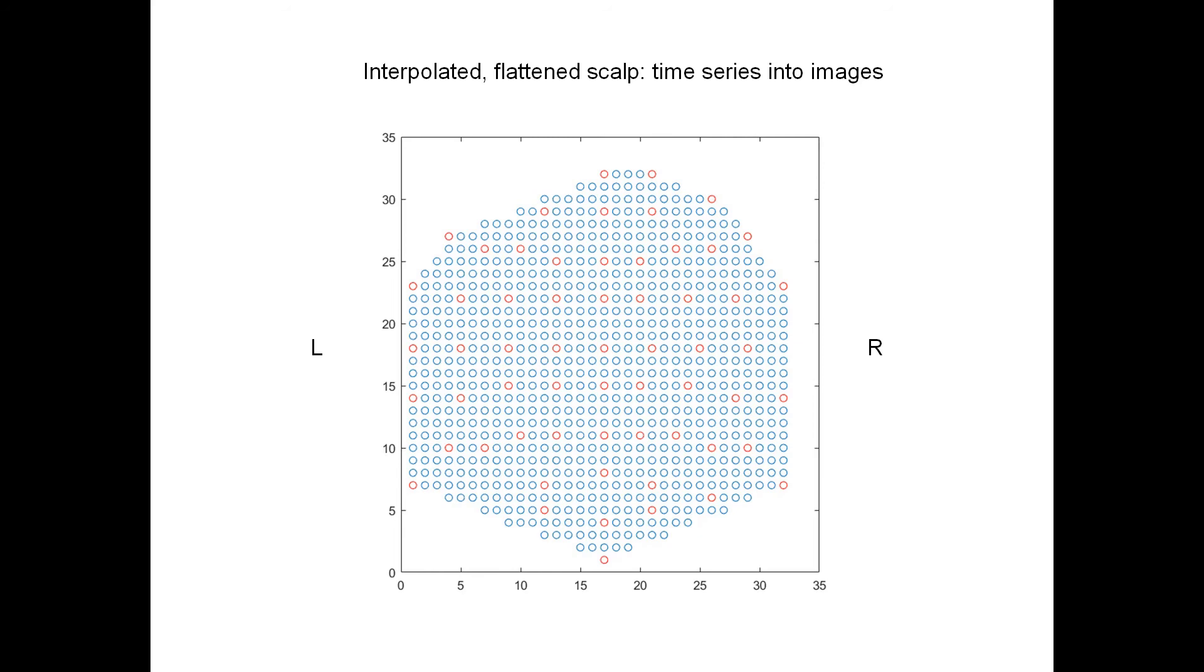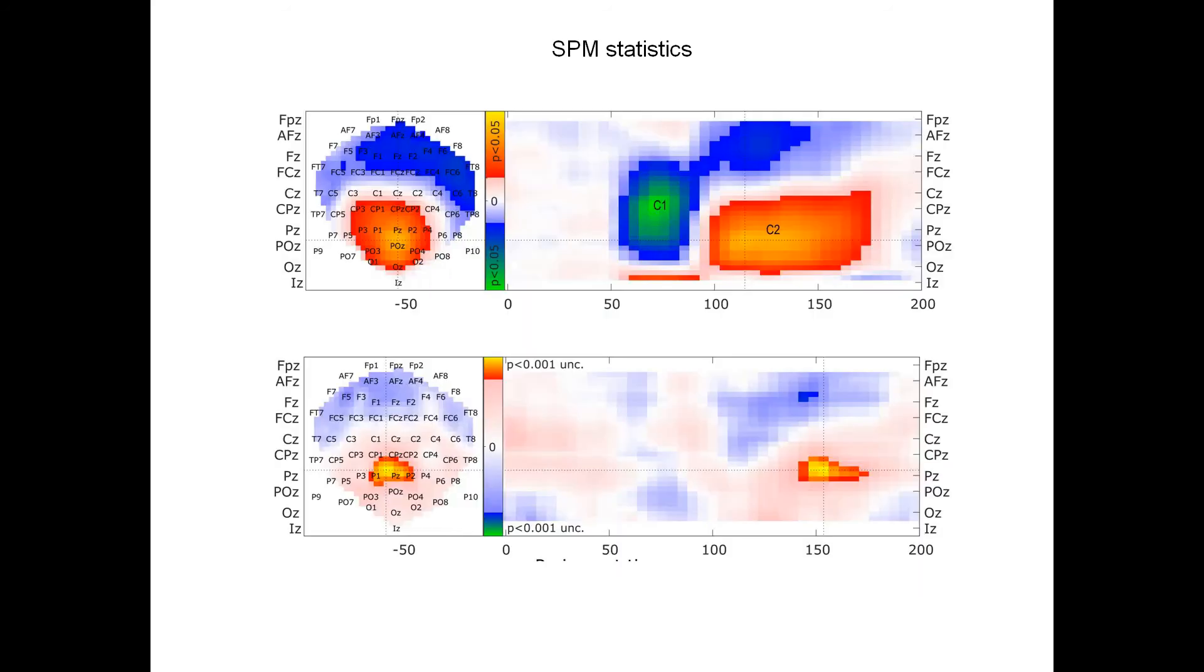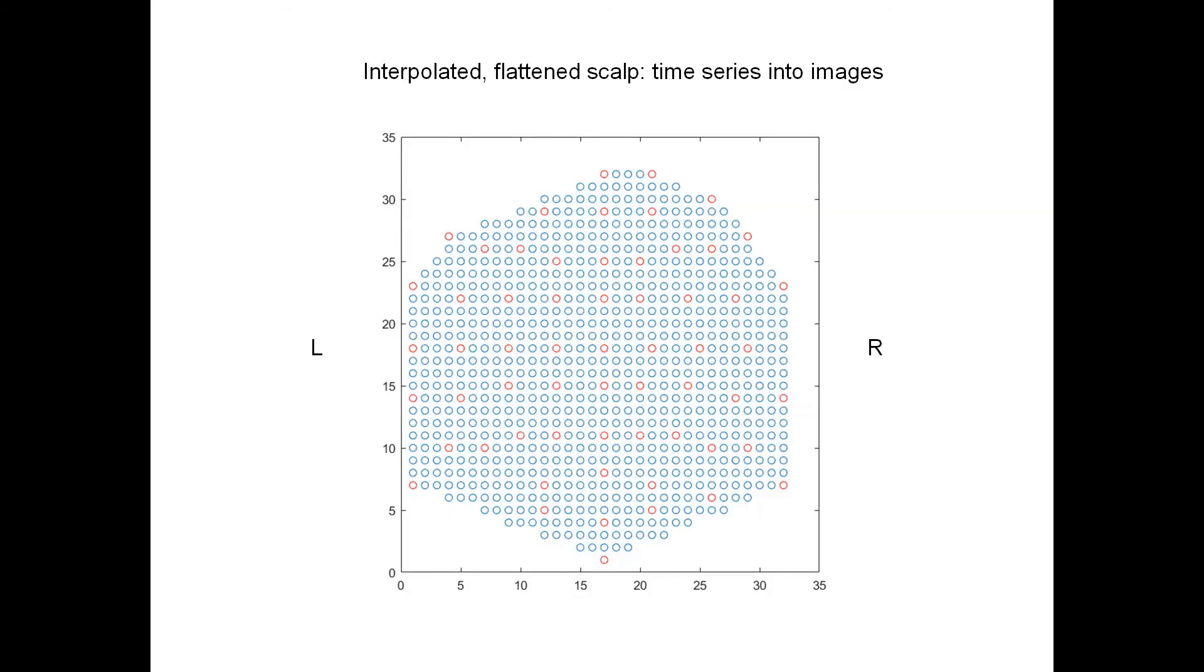SPM is mostly an fMRI tool, but instead of fMRI, you can use it for analyzing EEG. First, you need to interpolate at each time point the electrode data into a plane, a matrix, 32 by 32 in this case.